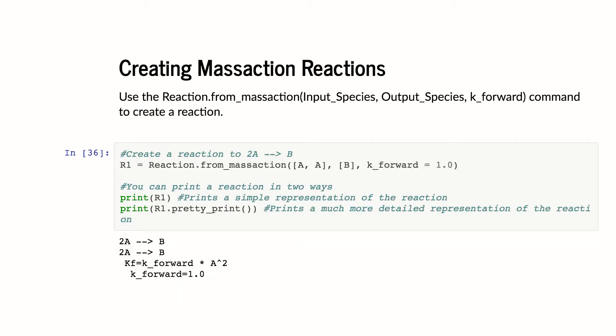How do you create reactions? So I'll start with making mass action reactions. These are very easy. I say my R1 is equal to reaction dot from mass action, and I then give it a list of inputs. This is 2A. You'll note you can't write 2 times A. You have to write A comma A. And then we have B. So this is the reaction 2A goes to B. And I give it a rate of K forward.